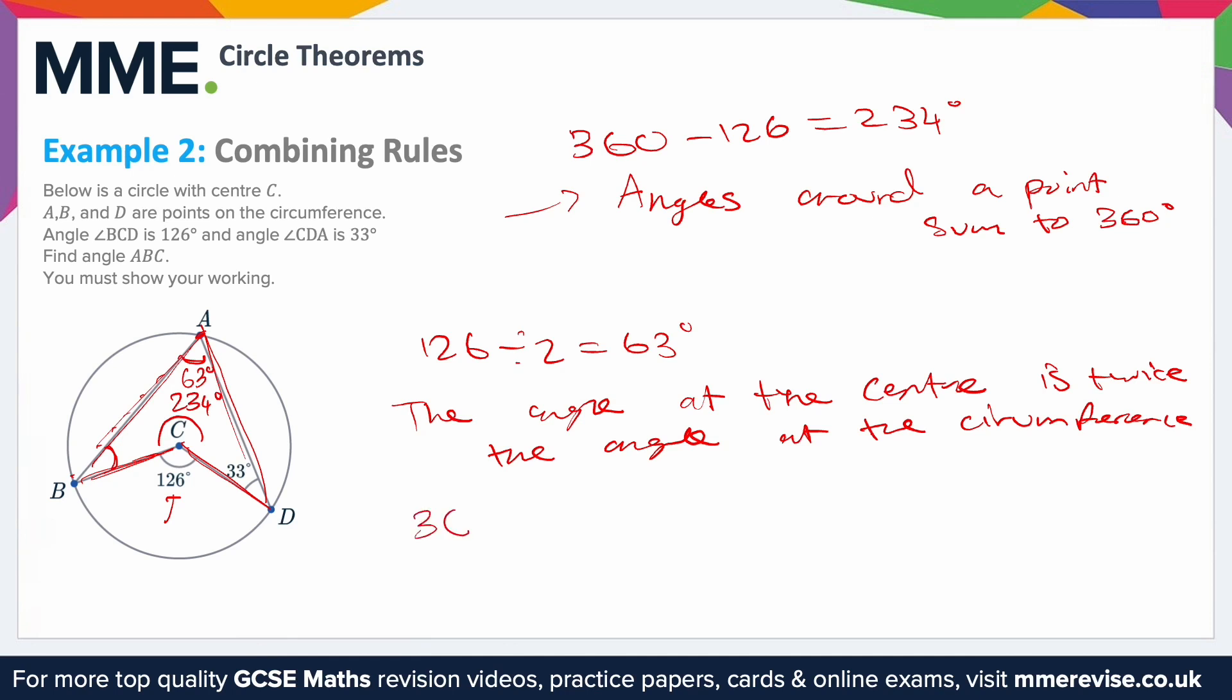So we could do 360 take away all the angles that we know. So 360 take away 63 take away 33 take away 234, and this will give us the missing angle that we're trying to find, which gives us 30 degrees. And that's because angles in a quadrilateral sum to 360 degrees.